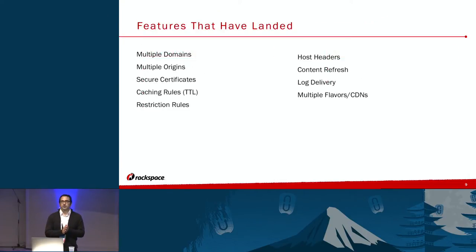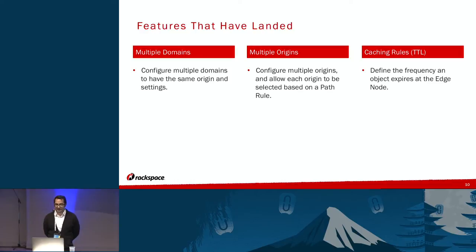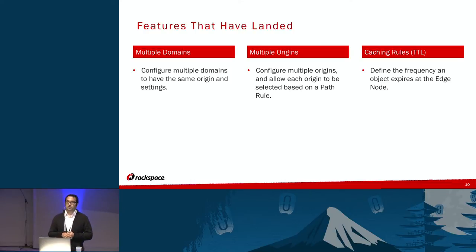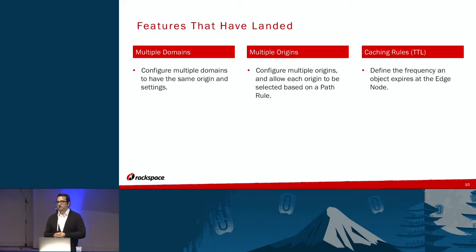What can Poppy do? Multiple domains: we have the ability to configure multiple domains to have the same origin and settings. You can have js.example.com and css.example.com set up with the same rules, but with multiple domains to make your configuration easier. We also support multiple origins. Let's say you have all your images stored in a public Swift container — you can set up rules to say images pull from my public Swift container, but everything else pulls from my Nova instance. And we have caching rules — a typical CDN feature. Set the TTL on your assets, and those CDN vendors will honor that.